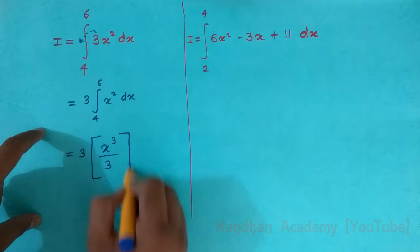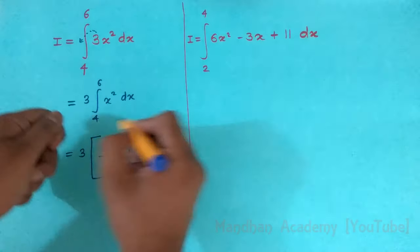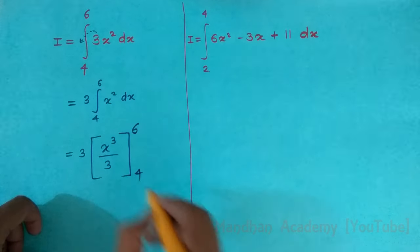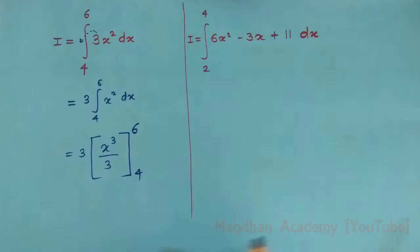Now what you have to do is just put square bracket and write down the limits. So you need to remember one thing, upper limit minus lower limit.